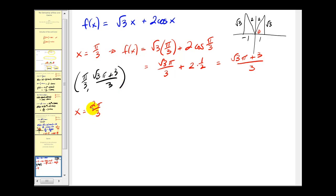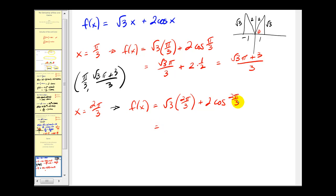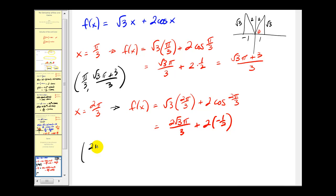When x equals two pi over three, we use the reference triangle in the second quadrant, where cosine of two pi over three equals negative one-half. So we have two square root three pi over three plus two times negative one-half, giving two square root three pi over three minus one, which is the same as two square root three pi minus three, all over three. The ordered pair is (two pi over three, (two square root three pi minus three) over three). I hope you found this video helpful. Thank you for watching.